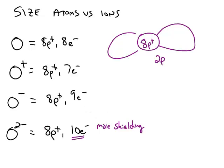So oxygen with the negative 2 charge has the most electrons, it has the most shielding, and the most shielding is going to make this the largest in size.